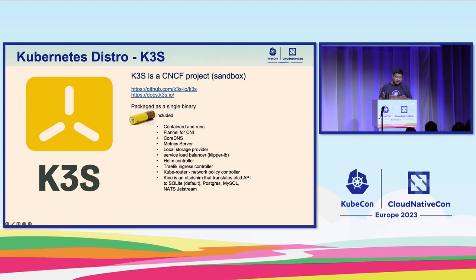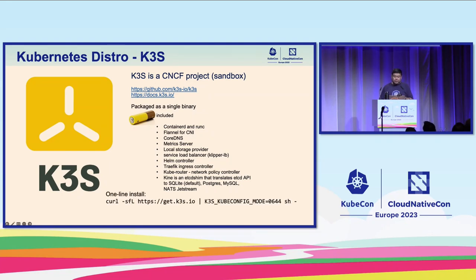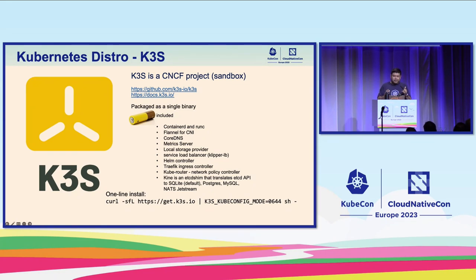K3S comes with Kine, which is an etcd shim. By default, K3S uses SQLite, but you can also use Postgres, MySQL, NATS JetStream, and of course etcd as well. There's a one-line install — from the quick start guide it gives you a curl command, but I like to add the K3S kubeconfig mode so you can use kubeconfig without the K3S binary if you like.